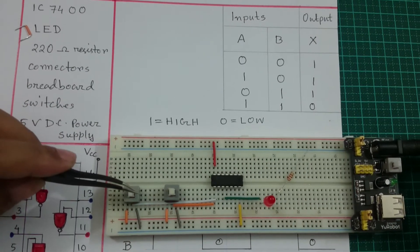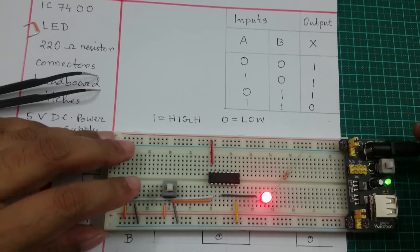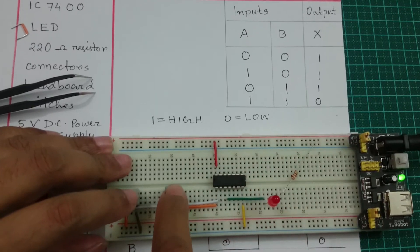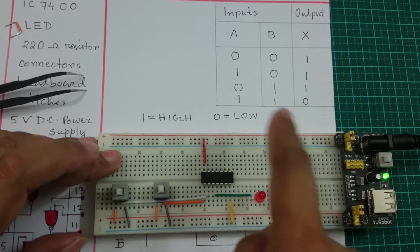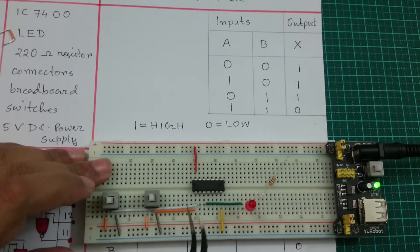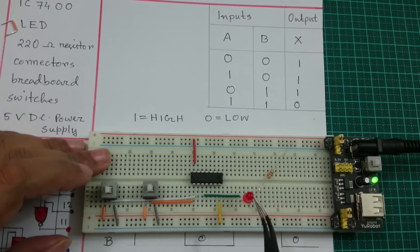I turned on the power. With both switches at 1, meaning high inputs, the LED is off. This means I am giving two highs and getting a low output.